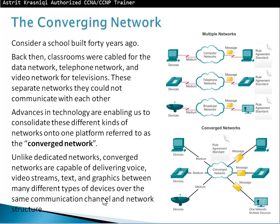Unlike dedicated networks, converged networks are capable of delivering voice, video streams, text, and graphics between many different types of devices over the same communication channel and network structure. Before, you had to manage three or four different kinds of networks — computer networks, telephone networks, broadcast networks — and employ three technicians. Now, with converged networks, all different kinds of data, whether it's TV, computer data, phone, or video, they all can go through the same communication channels.